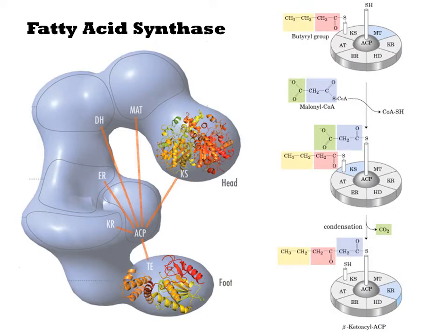FAS inputs one acetyl-CoA molecule and many malonyl-CoA molecules and outputs one acyl chain. First, an acetyl-CoA molecule becomes bound by a thioester linkage to the ketoacyl-synthase domain of the fatty acid synthase. This 2-carbon unit is the initiator for the polymer being made. It will end up on the alkyl end of the fatty acid.